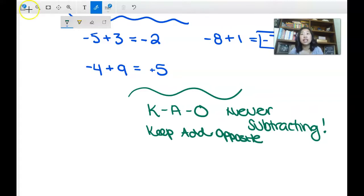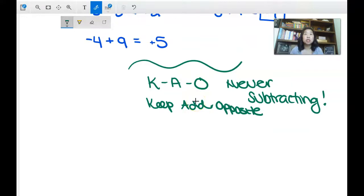So what does this look like in action? Let's pull up a different color here. Let's do orange. So if I have 9 - (-5), I'm going to keep my first number 9. I'm going to change my subtraction to an add, and then I'm going to change the second number to the opposite. So the opposite of -5 is positive 5. So now it's really 9 + 5, which is 14. Hence why I'm never subtracting because I'm always adding the opposite.